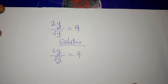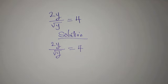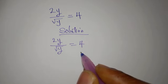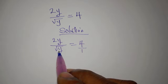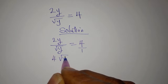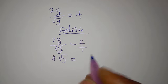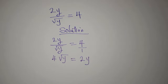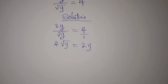Now the first step here is to cross multiply. Because this is over one, we can multiply across to give us 4 root y, and that would be equal to 2y times y, which is 2y squared.